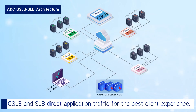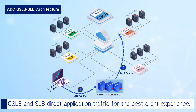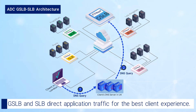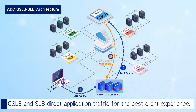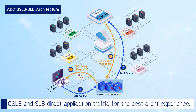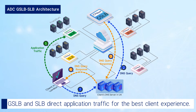In an example case, a client in London that wants to send traffic to an application server first sends a DNS query to its local DNS server in the UK. The local DNS server, in turn, forwards this request to a TCP WAVE GSLB appliance. The GSLB determines the best SLB for the client to use based on configured rules and the current health of the SLBs and application servers. Then the GSLB appliance sends a DNS response for the selected SLB to the local DNS server in the UK. The client subsequently receives the appropriate SLB virtual IP address for an application server located in Frankfurt, and sends its application traffic to the Frankfurt SLB.